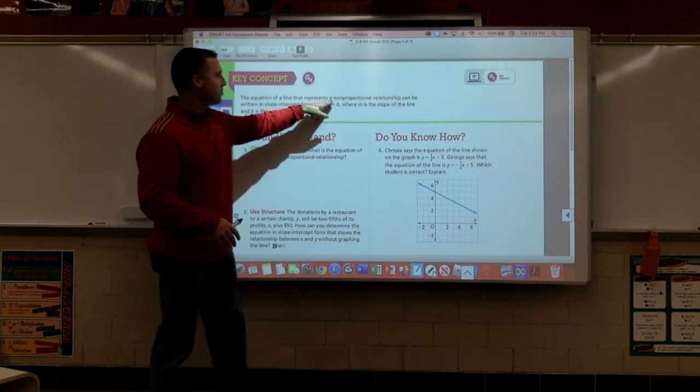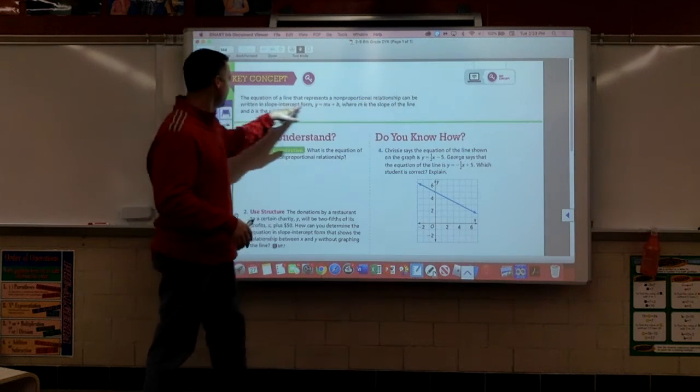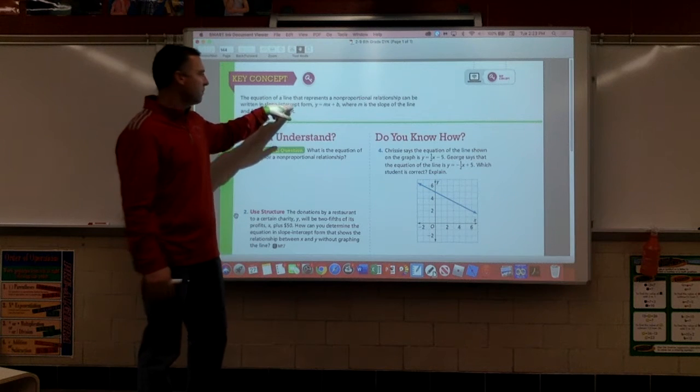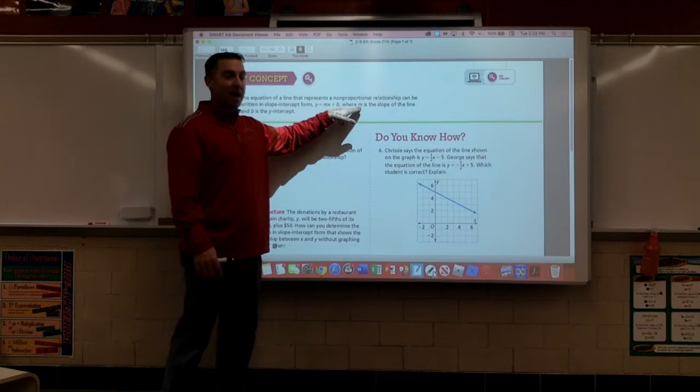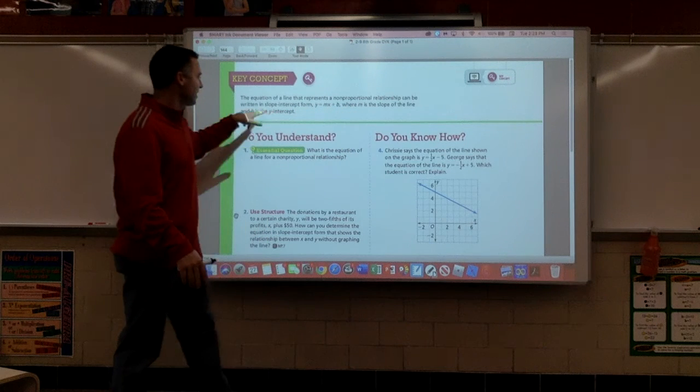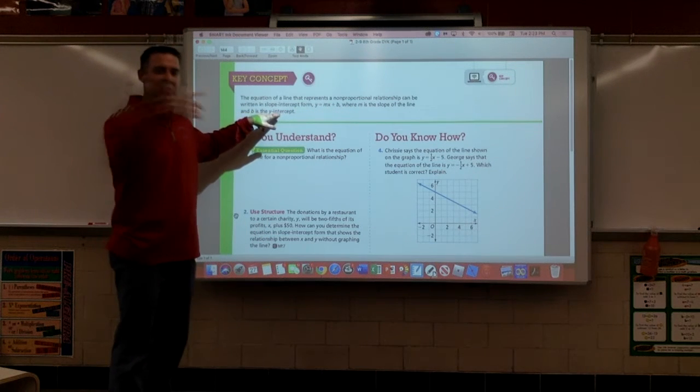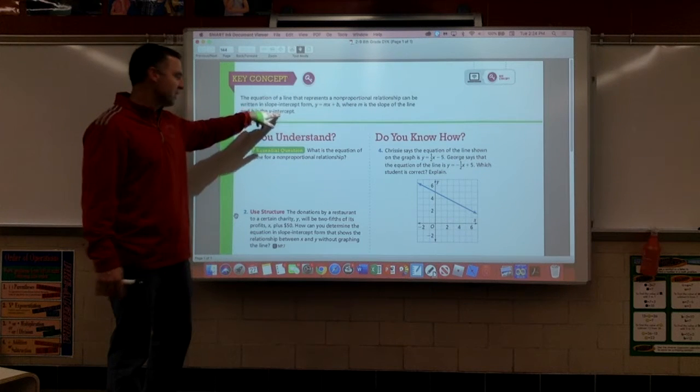The equation of a line that represents a non-proportional relationship can be written in what we are calling slope-intercept form, y equals mx plus b. That's right. M is still the slope, and this letter b represents that thing in 2a called the y-intercept.